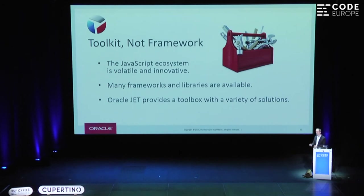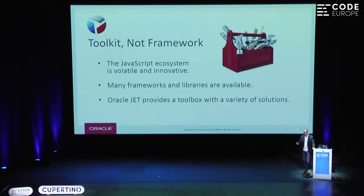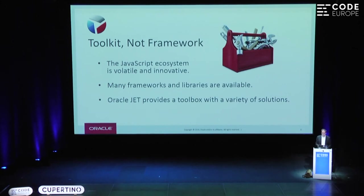Rather than committing yourself to one of these solutions, don't commit to a library, don't commit to a framework, don't commit to a technology. Commit to an architecture — an architecture that is modular, open to change, where you can take out pieces and replace them with new pieces, where you have your back end based around REST endpoints, where you're loosely coupled. Now more than ever it's important that we structure our applications in a responsible manner, because we need to change constantly with libraries coming and going and new technologies and new ideas.